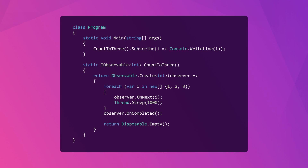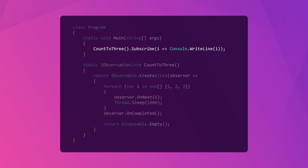This custom observable created using the static Create method gives us a better idea of how these notifications are called under the hood. Create takes a delegate method that provides access to the observer — this is where you can call OnNext, OnCompleted, and OnError. In the case of our example, the delegate loops through an array of numbers, emitting each value and then waiting for one second. Then it calls OnCompleted to let the observer know that the observable has completed successfully and will no longer be emitting values. The observer subscribed to this custom observable simply writes the emitted values to the console.